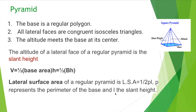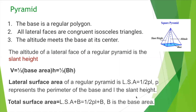The lateral surface area of a regular pyramid is one half times the perimeter of the base P times the slant height L. Total surface area equals lateral surface area plus base area. In this case the base is a square, so base area is the area of the square.